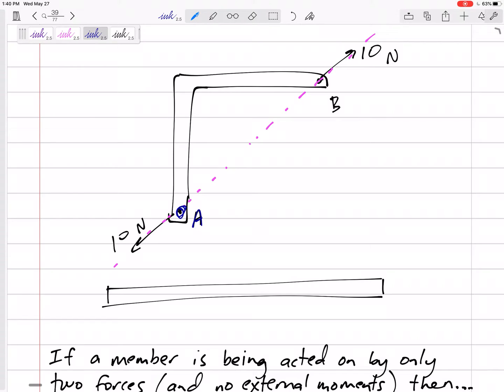If I sum my moments about A, then both of those forces go straight through it. If I sum my moments about B, then they're equal and opposite, they would add up to zero. That's the only thing that can happen.